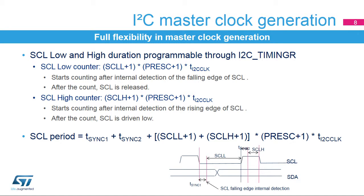The I2C master clock's low- and high-level durations are configured by software in the I2C timings register. The SCL low- and high-level counters start after the detection of the edge of the SCL line. This implementation allows the peripheral to support the master clock synchronization mechanism in a multi-master environment as well as the slave clock stretching feature. Therefore, the total SCL period is greater than the sum of the counters. This is linked to the added delays due to the internal detection of the SCL line edge. These delays, TSYNC1 and TSYNC2, depend on the SCL falling or rising edge, the input delay due to the filters, and the delay due to the internal SCL synchronization with the I2C clock.